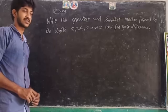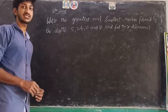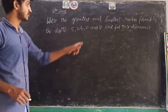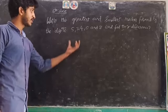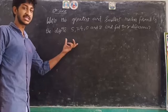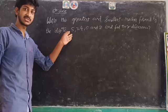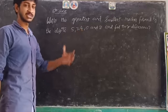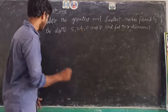Okay children, the second question is: write the greatest and smallest numbers formed by the digits 5, 3, 4, 0, and 7, and find the difference. By using these 5 digits, we have to find the largest number and the smallest number, and also find the difference between them.